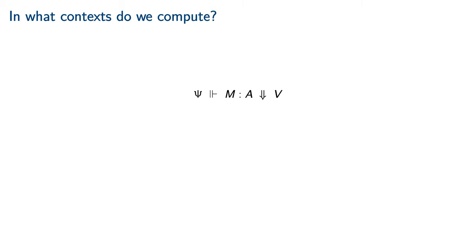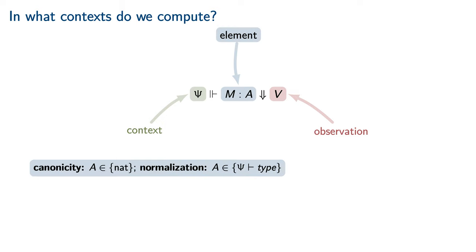Canonicity and normalization are two points within a spectrum of computational results for type theories. Type theoretic notions of computation vary in a few important parameters. Which elements are we computing? What observations are we making about them? And in what contexts are we doing so? For canonicity, we consider only elements of base type, such as the natural numbers. On the other hand,